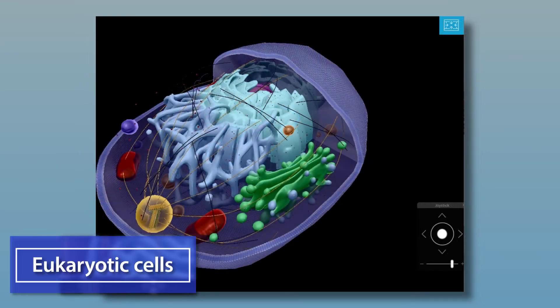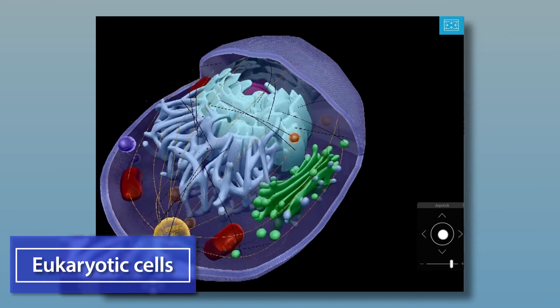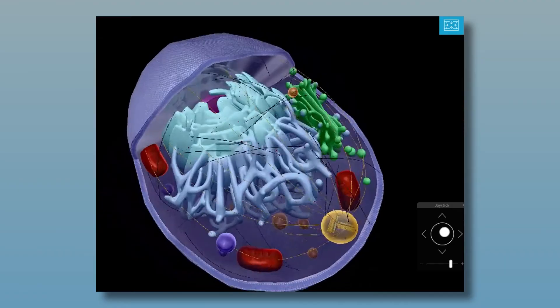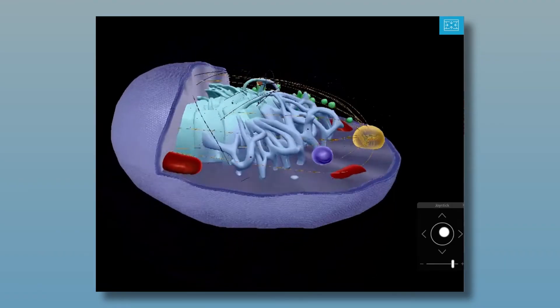Now let's check out eukaryotic cells. Animal and plant cells are good examples of these. Eukaryotes are organisms that are made up of one or multiple eukaryotic cells.